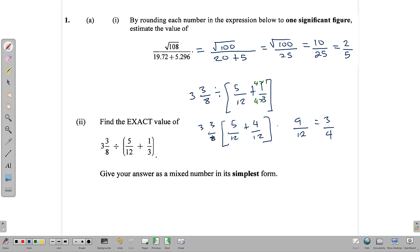Now what we have here is 3 and 3 eighths. Let's write that as an improper fraction. So 3 eighths is 24 plus 3. That's 27 over 8 divided by 3 quarters, which leads us to keep, change, flip.